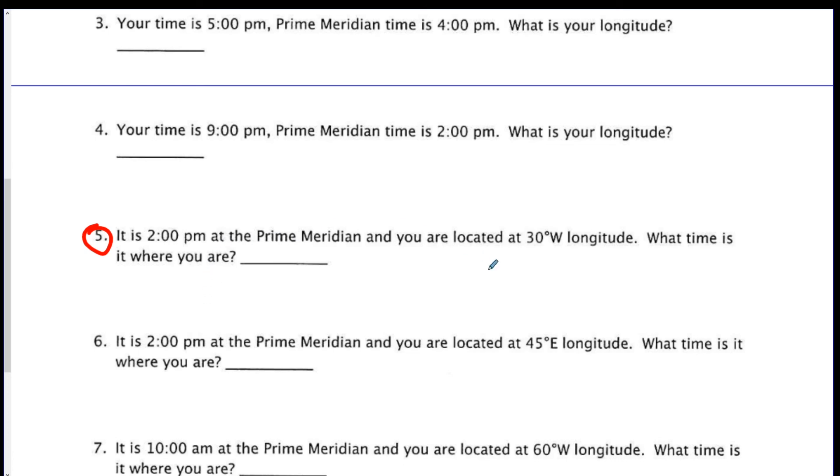Okay. Well, first we draw prime meridian. It's 2 o'clock p.m. here, and I'm at 30 degrees west, so I'm west of the prime meridian.